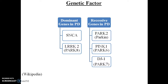The last recessive gene is DJ1, the PARK7 gene. The PARK7 gene provides instructions for making the DJ1 protein, which is found in many tissues and organs including the brain. One of the protein's functions may be to help protect cells, particularly brain cells, from oxidative stress.